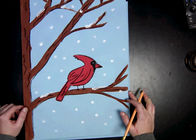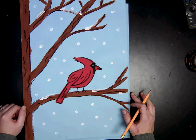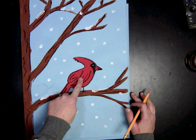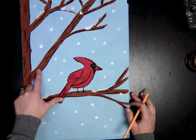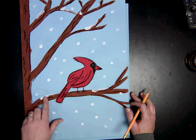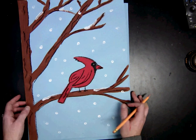To begin our winter cardinal scene, we are going to start by drawing our tree and our cardinal. Then we will paint the cardinal and the branches, and next we will add some details in the trees. We will add snow and snowflakes as well.